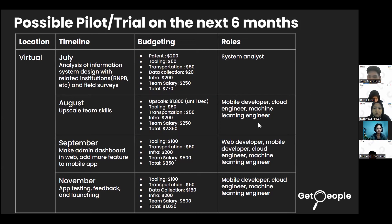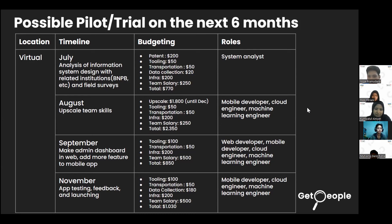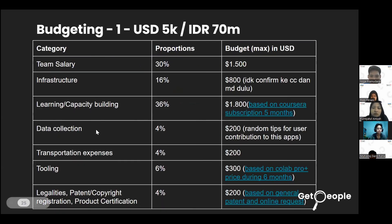The August to December timeline follows the same project milestones as described previously. Funding explanations are similar to the first month, but we plan to upscale with a funding amount of 1,800 for Coursera subscription fees. In November, we allocated 180 for data collection expenses as rewards for randomly selected users who contributed positively to our app. For roles, in the first month we need a system analyst, which we may outsource or handle internally. From August onward we return to main roles, with some team members swapping developer roles in September and October.